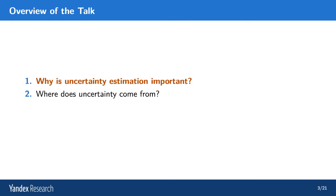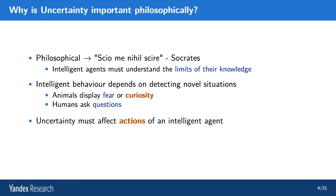Let's focus on the first question. Philosophically speaking, intelligent agents must understand the limits of their knowledge. Animals will display fear and curiosity, they will explore new environments, they will act anxiously when facing situations they haven't faced before. Humans can ask questions, weigh risk and reward, and in general, make decisions under uncertainty. Uncertainty, or estimates of uncertainty, must affect the actions of an intelligent agent.